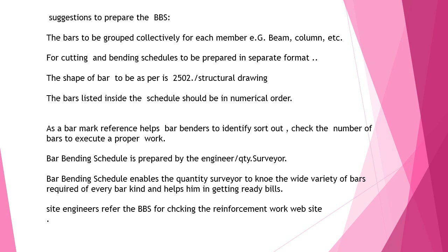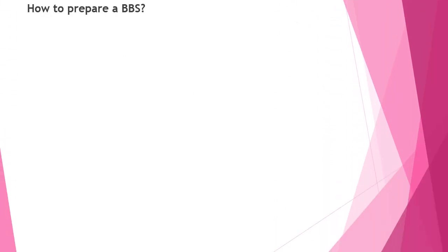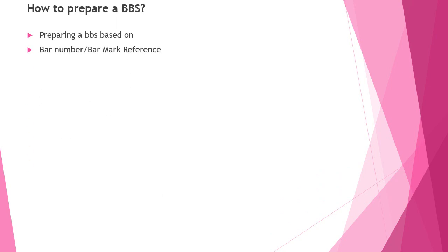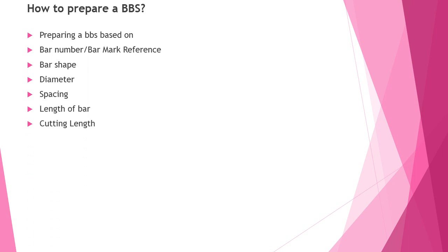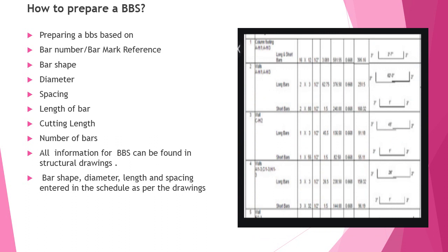The site engineer uses bar bending schedule for checking the reinforcement. How to prepare a BBS? Preparing a BBS is based on bar number, bar shape, diameter, spacing, length, cutting length, number of bars, etc. All this information can be derived from the structural drawing. Refer to the attached image which will explain how to incorporate the bar bending schedule.